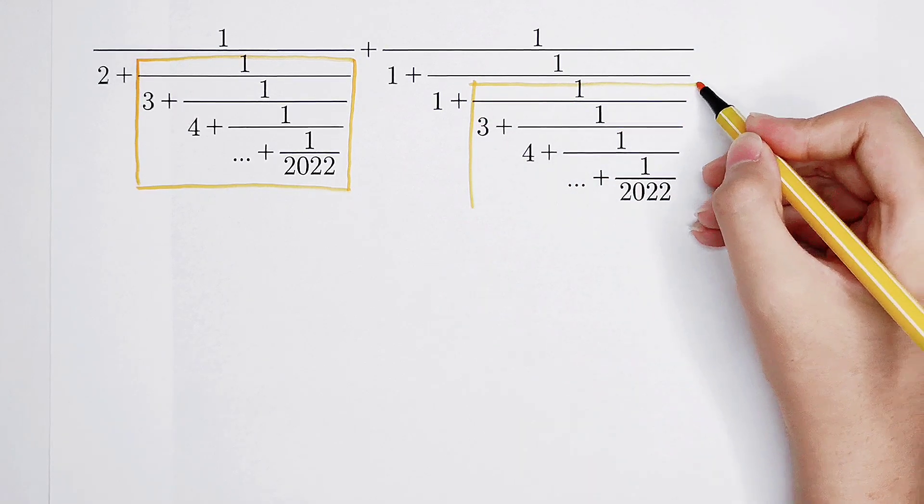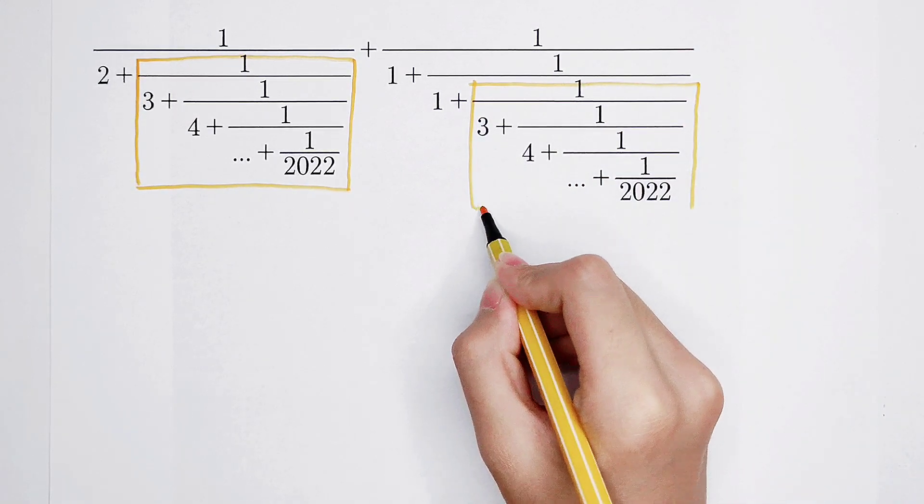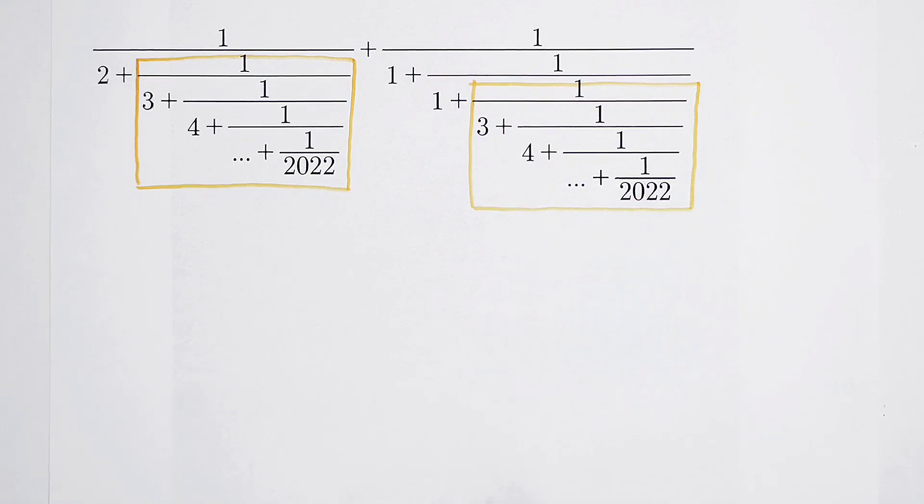This 1 over 3 then plus 1 over 4 then plus 1 over 5 then plus blah blah blah until then plus 1 over 2022. Now, we've found the same parts of these two fractions.